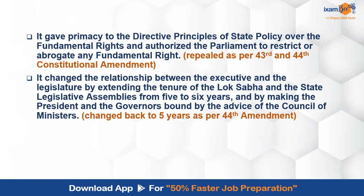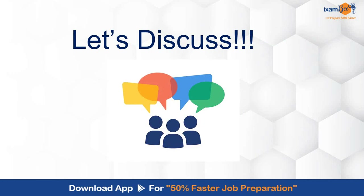The amendment also changed the relationship between the executive and legislature by extending the tenure of Lok Sabha and state legislative assemblies from 5 to 6 years, and by making the president and governor bound by the advice of the council of ministers. These changes were again repealed or reversed by the 44th amendment, and the tenure was changed back to 5 years. This is how this amendment was very lengthy and very controversial in nature, and all these changes were rectified later by subsequent amendments and invalidated by courts where required.